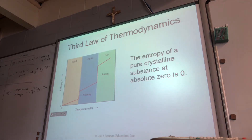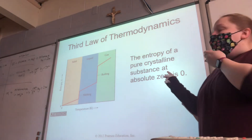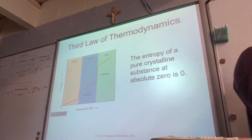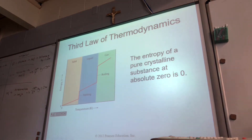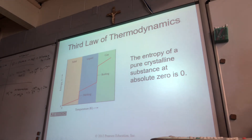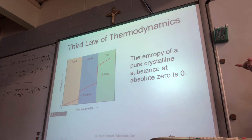That brings us to the last—the third—law of thermodynamics. For any pure solid substance at zero Kelvin, which is absolute zero, if you can get a substance down that far, there will be no entropy. The third law of thermodynamics states that at zero Kelvin, there will be no entropy. We haven't achieved absolute zero yet; we've been trying for a really long time.